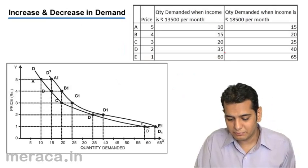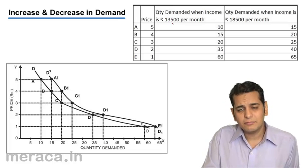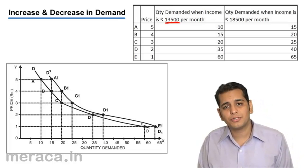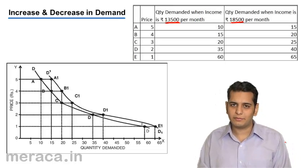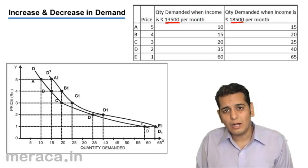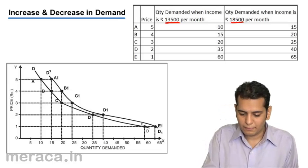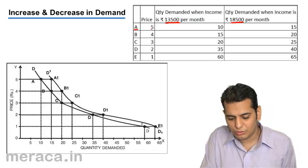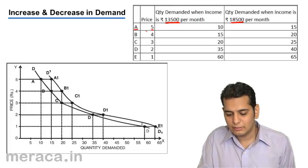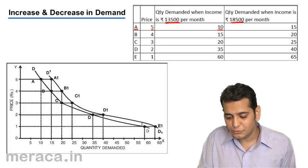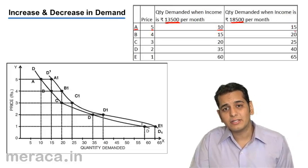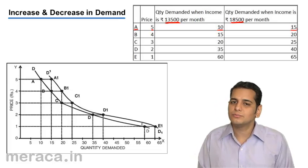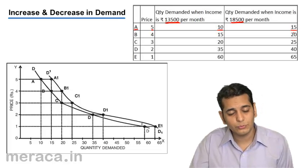Let's take an example. Our income levels earlier were Rs. 13,500 and now they are Rs. 18,500. Let's see how our consumption changes with a change in income level. At point A, when the price was Rs. 5, we were consuming 10 units. However, as the income rose, we increased our consumption to 15.